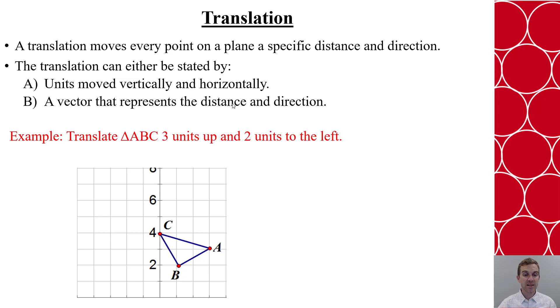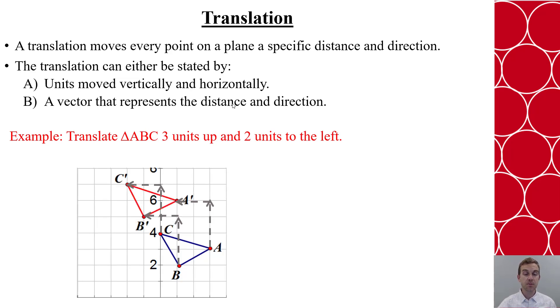Let's say we want to translate triangle ABC up three units and left two units. So we would literally think about moving those three points, even though it's the entire plane, think about it from the point perspective. I move the three points up, and then I'm going to move them to the left, and I'm going to place my translated points, A prime, B prime, and C prime, and there I'll have my translated triangle.